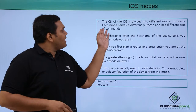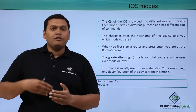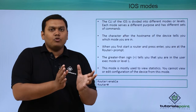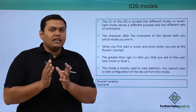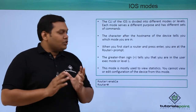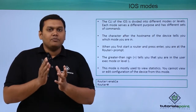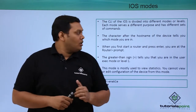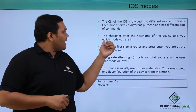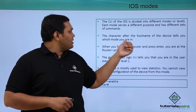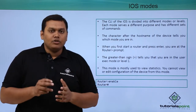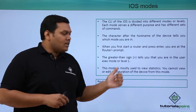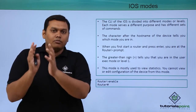The CLI of the iOS is divided into different modes. There are two to three kinds of modes: the first one is privilege mode, executable mode, and also global configuration mode. The character after the hostname of the device tells you which mode you are in. The greater-than symbol tells you that you are in the user executable mode, or level one mode.